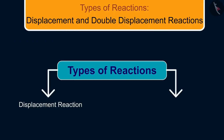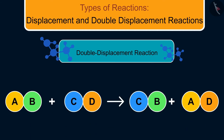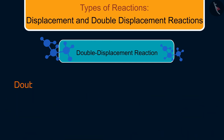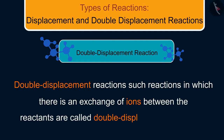We will now discuss another type of reaction: double displacement reactions. It is similar to displacement reactions, but the name itself suggests that there is double displacement — that is, a substitution of two atoms by two other atoms. In reality, such reactions in which there is an exchange of ions between the reactants are called double displacement reactions.